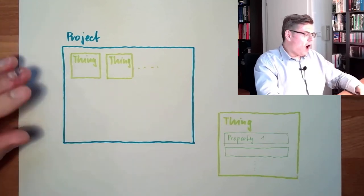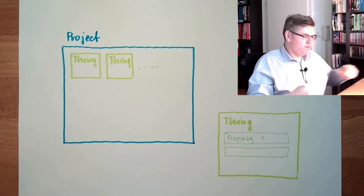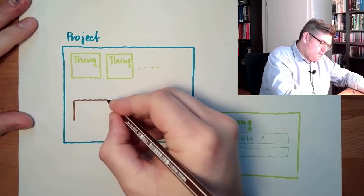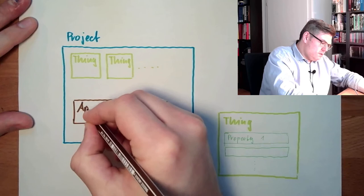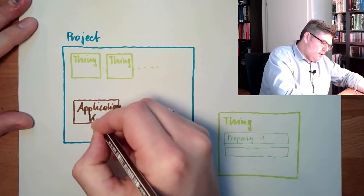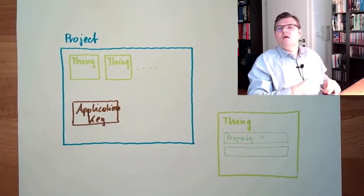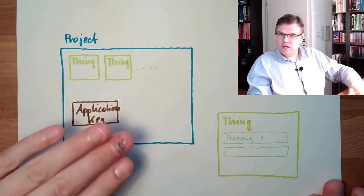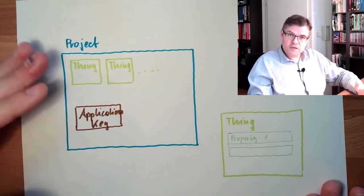How do we check if we are allowed to do something with the thing? There are also so-called application keys. This is controlling who is allowed to do what. If somebody knows the application key, they can change the thing. The project holds things and application keys.